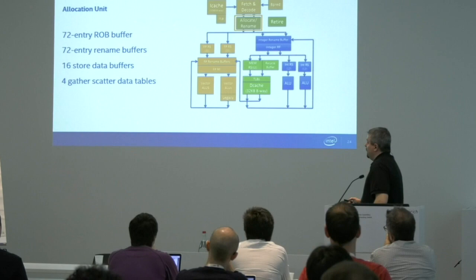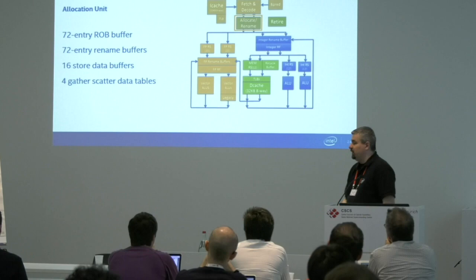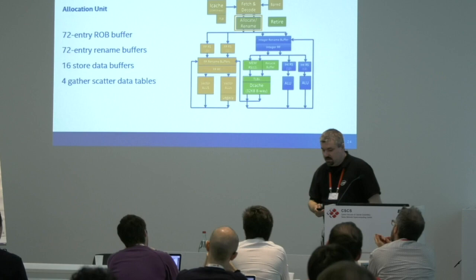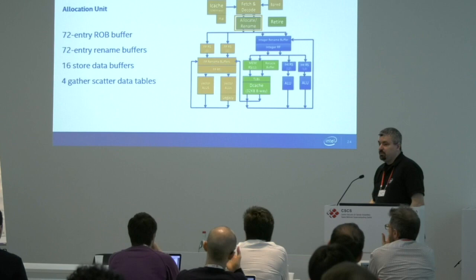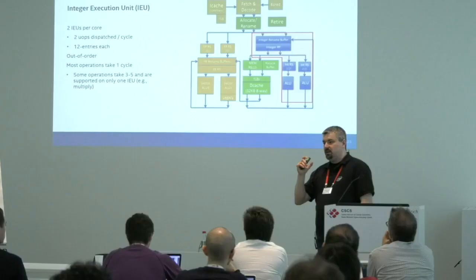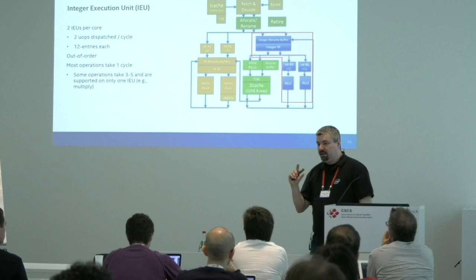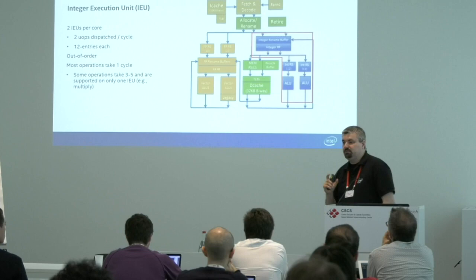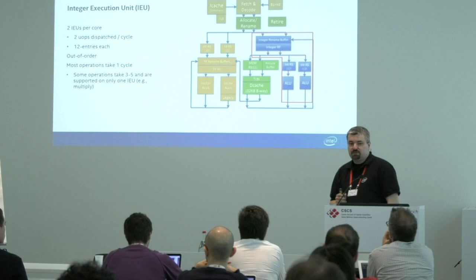There's a rename buffer for register renaming, plus additional buffers and tables for stores and gather-scatter operations to speed them up. There are two integer units — you can dispatch two micro-operations per cycle and execute them out of order. Most instructions take about one cycle in throughput, but some instructions like multiplies are lengthy and can only execute on a single port.